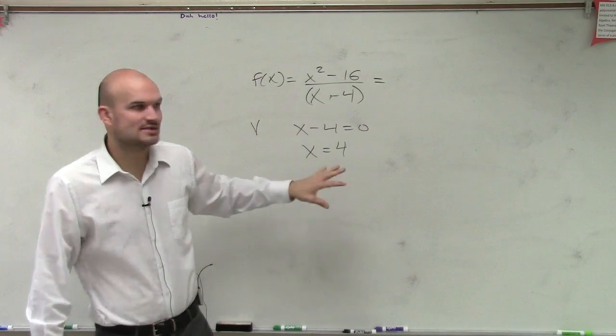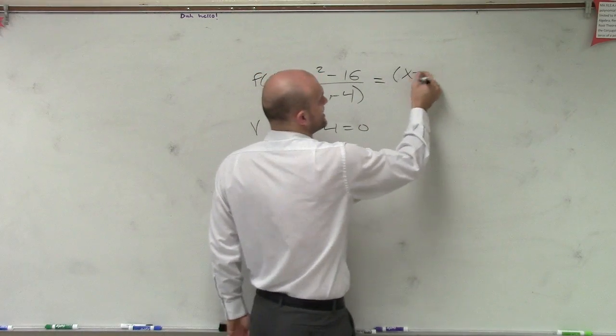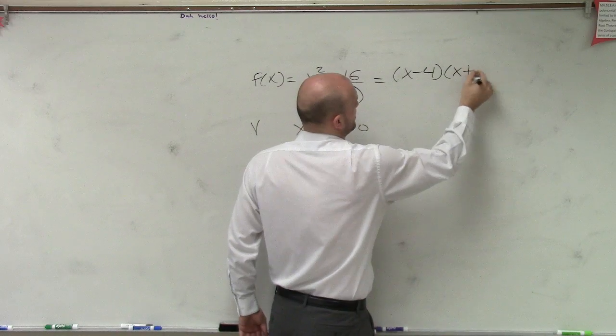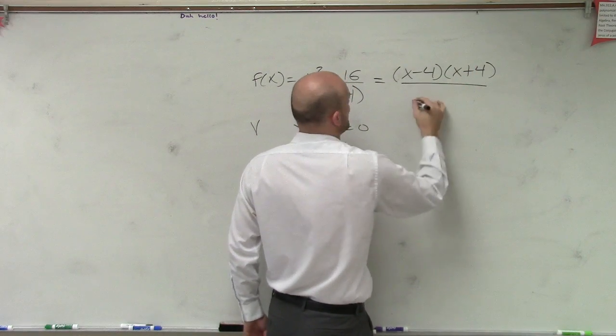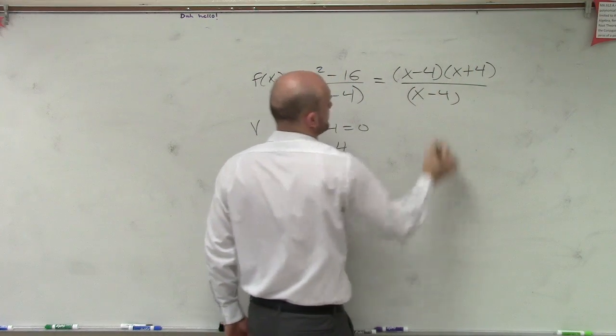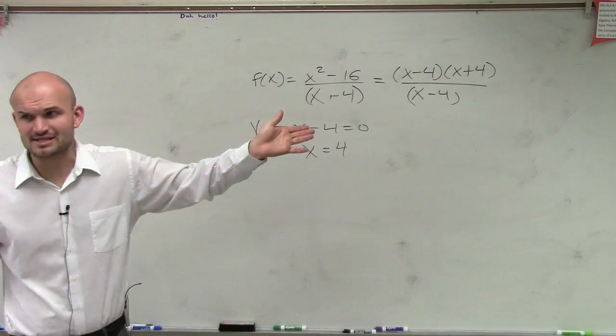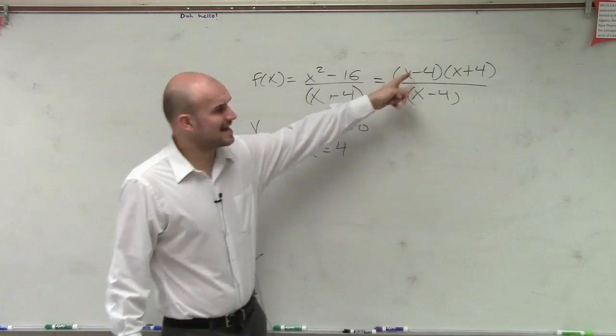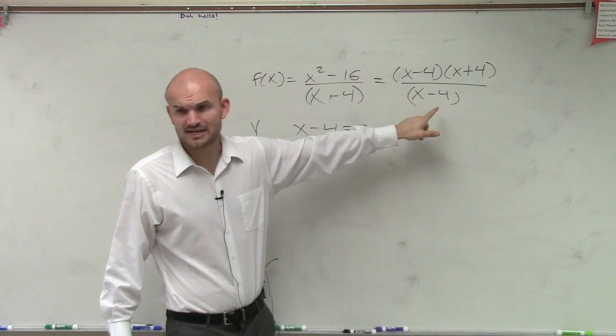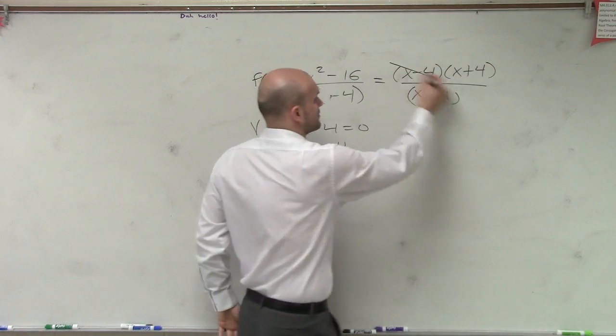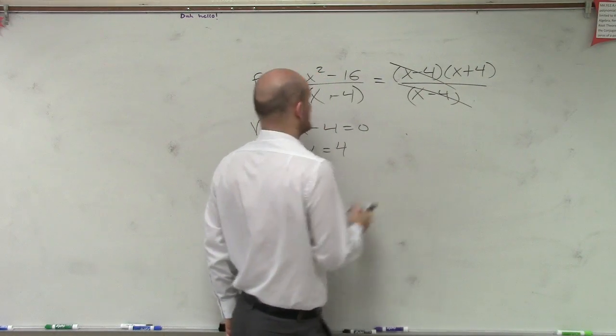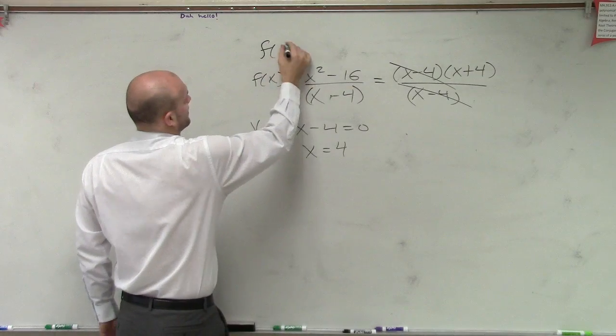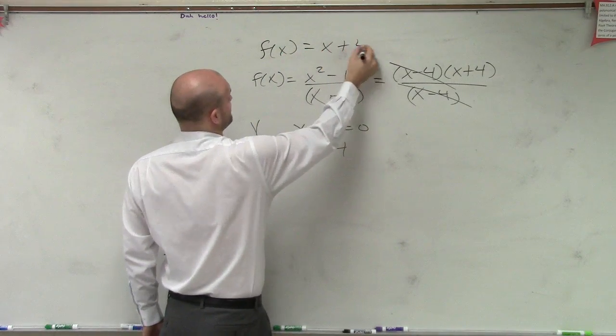Before I even go to the horizontal asymptote, I can rewrite this as (x minus 4)(x plus 4), and that's divided by x minus 4. So if I'm doing x minus 4 divided by x minus 4, then really my function is just f(x) = x + 4.